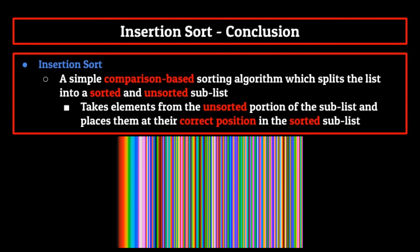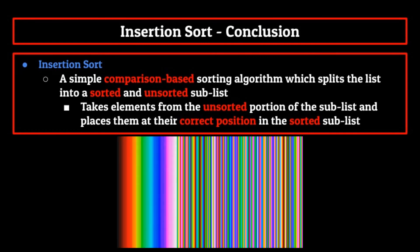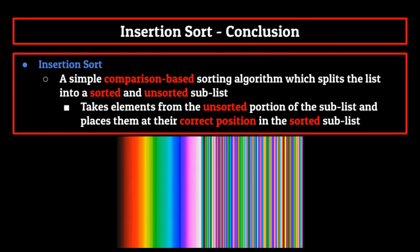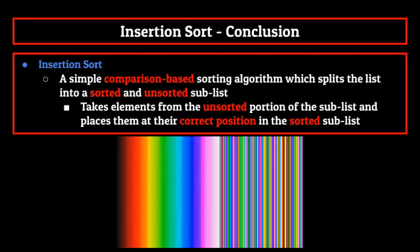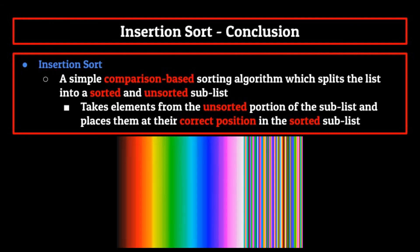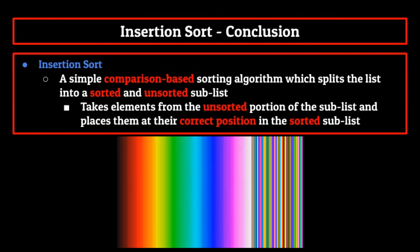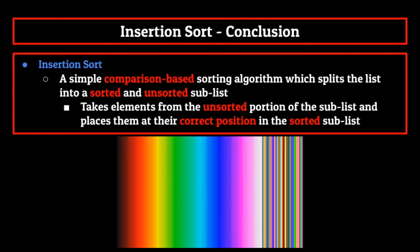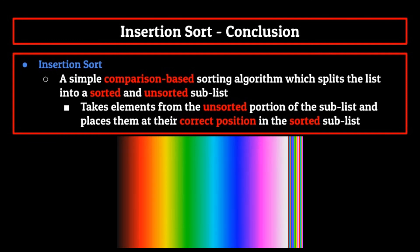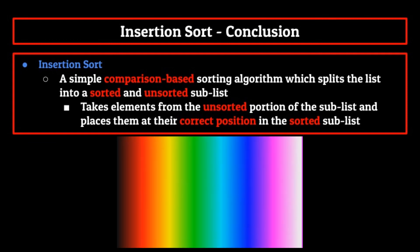And with that, we have concluded our discussion on insertion sort. As a review, we can define insertion sort as a simple sorting algorithm which splits the list into a sorted and unsorted sub-list. We then take elements from the unsorted portion of the list and place them at their correct position in the sorted list. Next week we'll talk about another type of insertion sort known as shell sort. If you haven't checked out the other videos in the series, I'd highly recommend you do so to get caught up — and make sure you subscribe while you're at it. Thank you for watching.